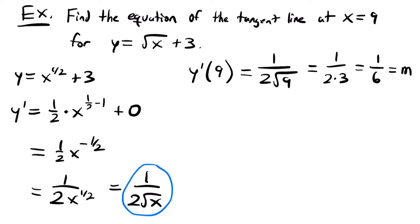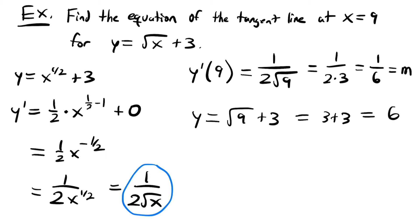We're almost ready to put together our equation of a tangent line, but we need one more thing. For point-slope form, we need a point and a slope. We have a slope, but we only have the x value. We need the y value too. To get that, we plug our x value into our original function: y equals the square root of 9 plus 3, which equals 3 plus 3, which equals 6. So our point is (9, 6).